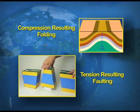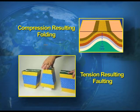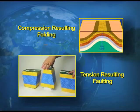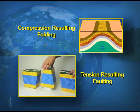Compression, which involves forces working from opposite directions, results in folding of the rocks — as the diagram clearly illustrates. Tension, being a vertical movement, leads to faulting, which the diagram also demonstrates.